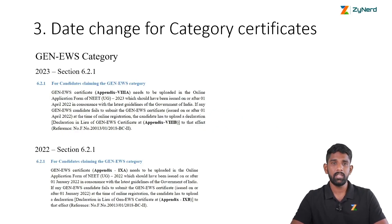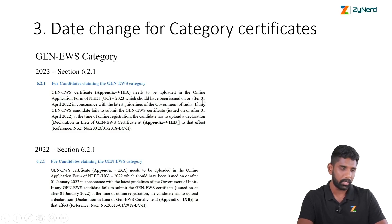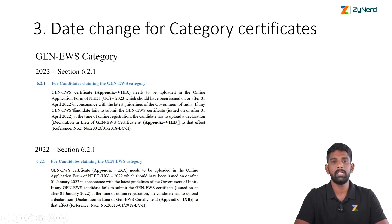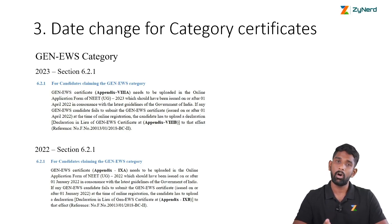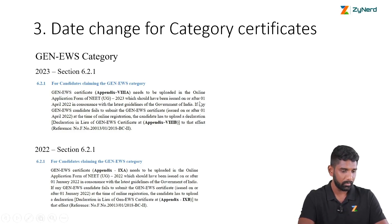Next is the date change for category certificates. For the General EWS category, the certificate should be issued on or after 1st April 2022, which is the date given for this year. Last year it was 1st January of the previous year, so there is a change in the date. For the 2023 application form, make sure you note this date.